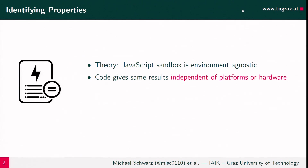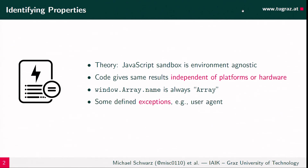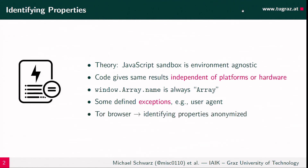The same code should have the same results in all operating systems with the same browser, and ideally across different browsers too. There are some defined exceptions — properties like the user agent that tell us the browser version or environment, but these can easily be faked by the user for privacy reasons. The Tor browser, for example, tries to anonymize all properties so everything looks completely the same across environments.